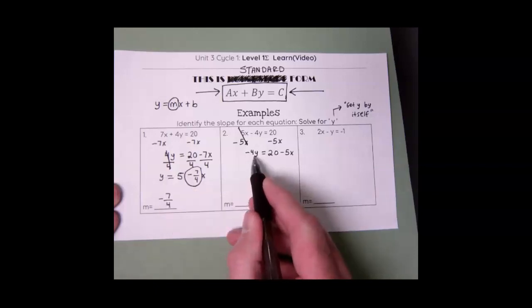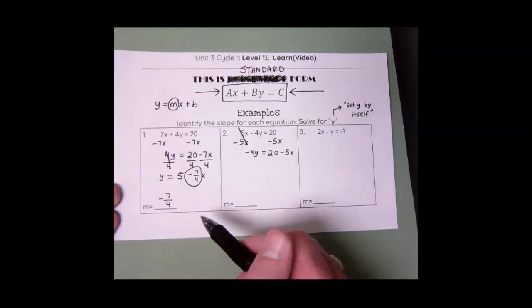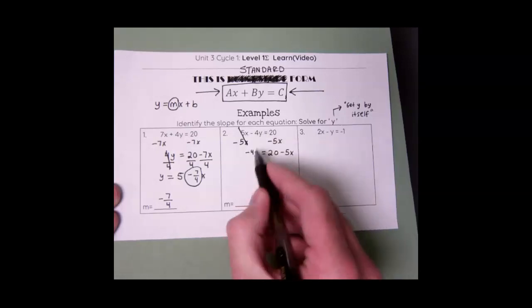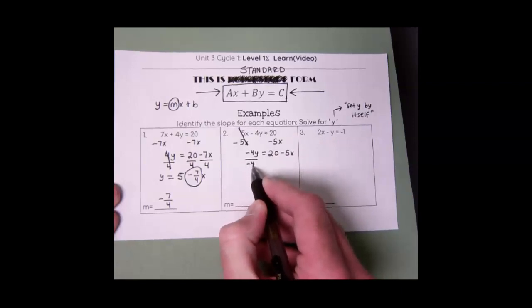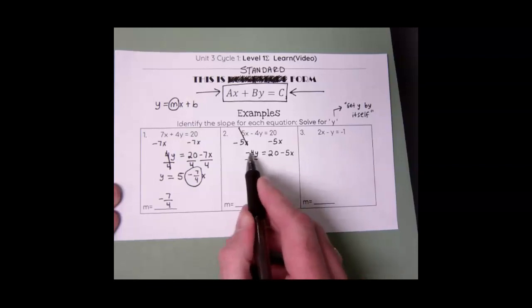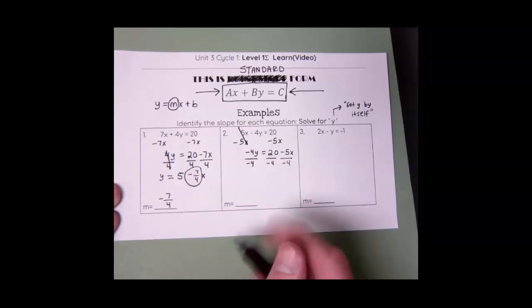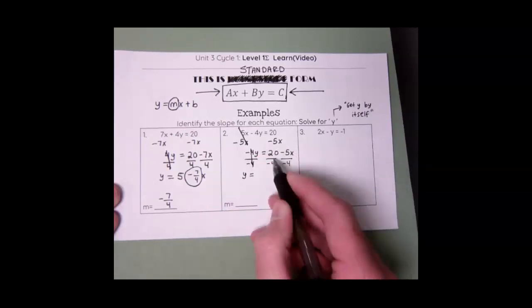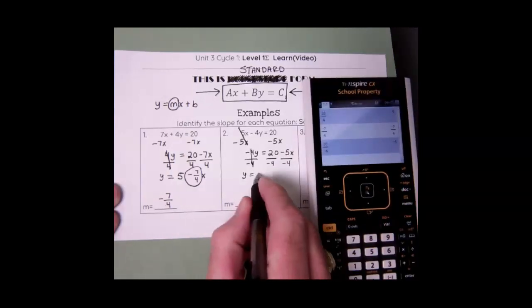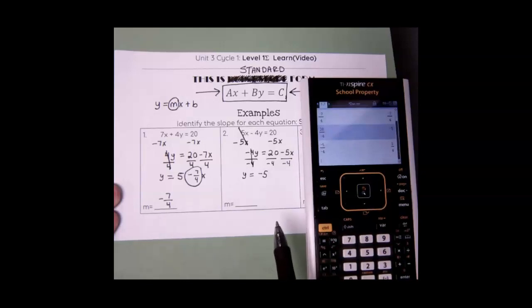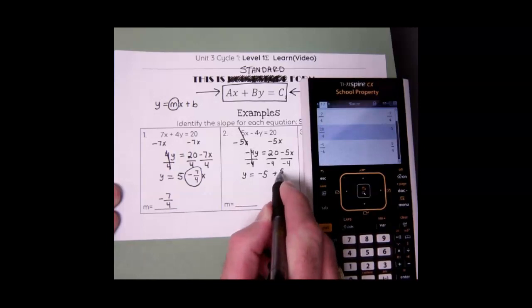Now I need y by itself. The reason y is not by itself is because I have negative 4 there — they are being multiplied together. So to get rid of a negative 4 when they're being multiplied, I need to do the opposite and divide by negative 4. I need to do that everywhere. So I get y, because those cancel out. 20 divided by negative 4 gives me negative 5. And negative 5 divided by negative 4 — two negatives divided by each other — gives me positive 5 over 4x.